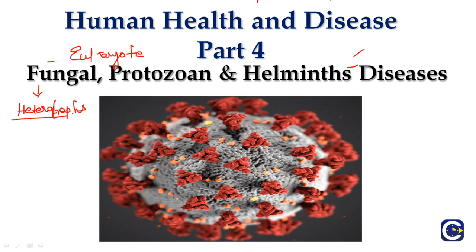Some fungi are flagellated while others form spores. Fungi also include symbiotic relationships — take lichens, for example. Lichens are comprised of algae and fungi growing in the same place, sharing nutrients with a mutual understanding that they don't affect each other. They play an essential role in the decomposition of organic matter and have fundamental roles in the nutrient cycle.